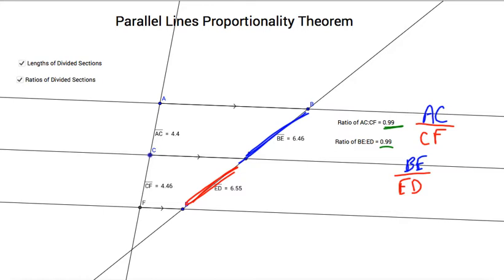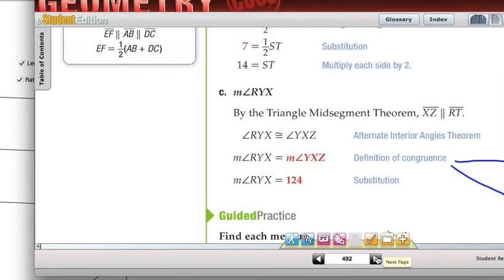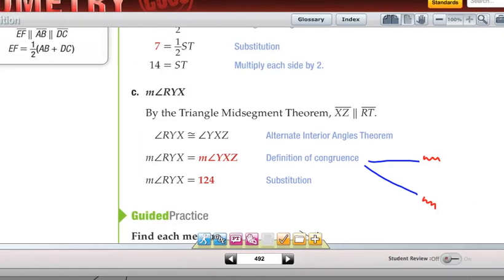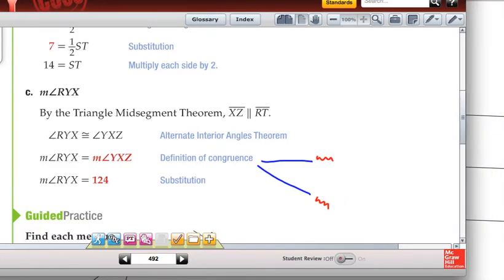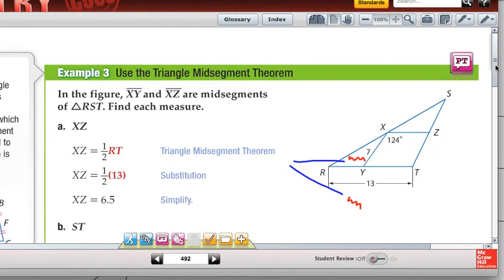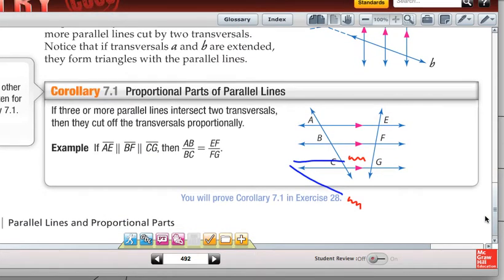Triangle proportionality here. Good idea for us to write this one down, flip two pages in your book to page 492. There it is, at the bottom of the page there. Corollary 7.1, proportional parts of parallel lines. It would be a good time to pause and write down that lovely little box as your example. Then resume the video when you're ready for the third and final theorem.